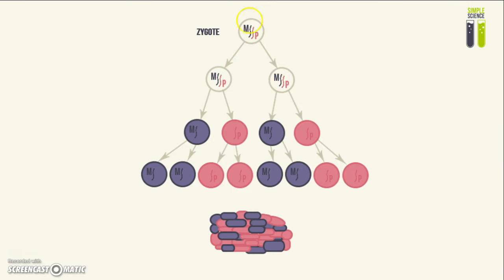As the zygote undergoes further cell division, it will finally have to undergo something called X chromosome inactivation. This is when one of the X chromosomes is basically inactivated, so its genes will not be translated into proteins at all.